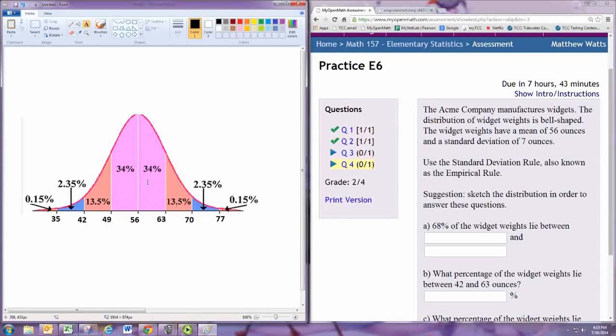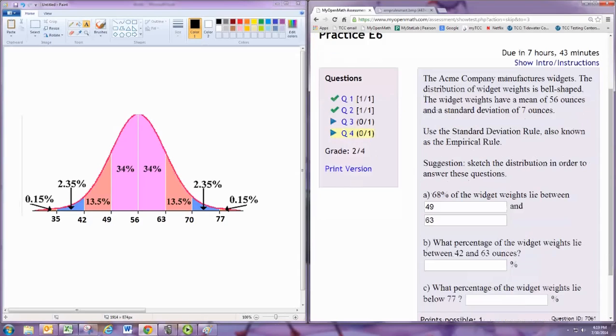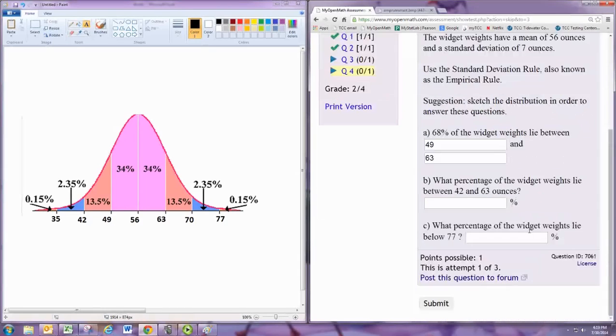I know 68 percent is the middle, the pink part, and you can see that's between 49 and 63. Part B actually extends to 42 to 63, okay.